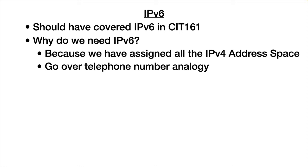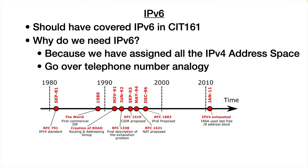But if you look at your telephone pad, 859 spells out UKY — that is why Lexington became 859. So we were running out of telephone numbers and came up with a solution. Going back to networking, this is a timeline of IP version 4, showing when it was created in the early 80s.